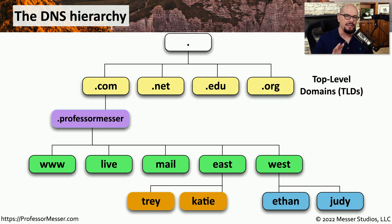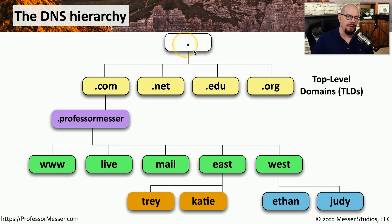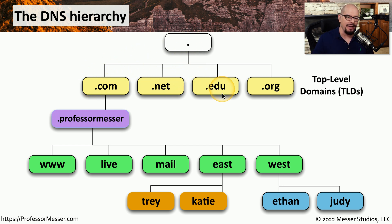Here's a very simple visual representation of this hierarchy from the perspective of ProfessorMesser.com. We'll start at the top with a period, and this designates the end of the fully qualified domain name. And working backwards, we would have a .com, a .net, a .edu, and others.